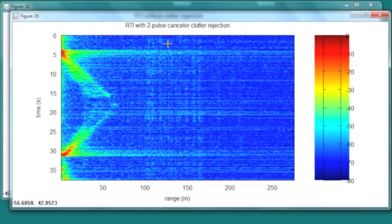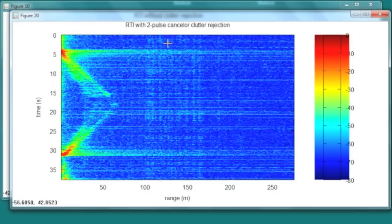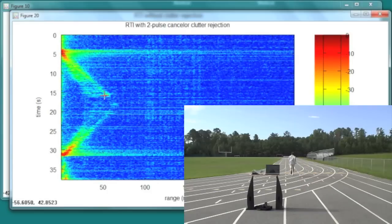There's a second plot, a little more processing done to cancel out that clutter, those static objects. And you see my reflection much more clearly, going out, turning around, and coming back.